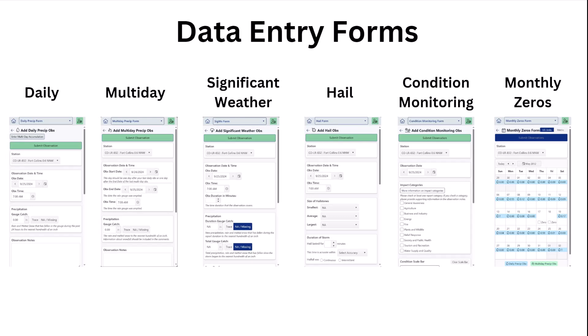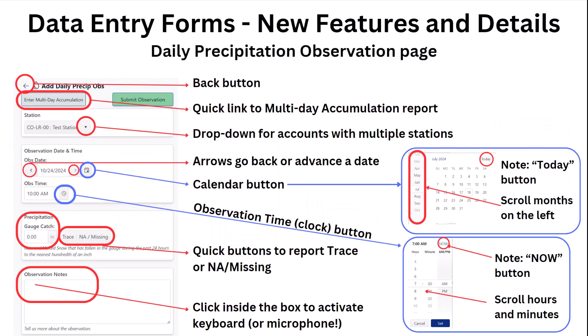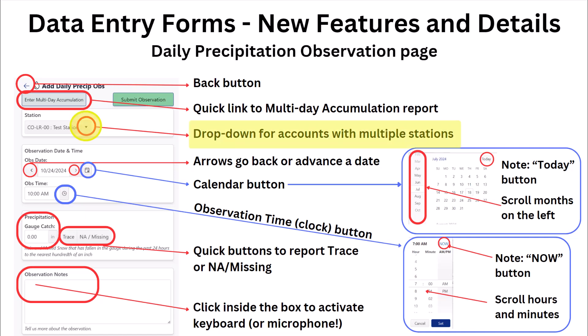We won't go over every specific detail of every form, but we'll show some of the main features found in most of them. The most common form is your daily precipitation form. There is a back button to navigate to the previous page, and you may receive an "are you sure" type of warning if you are in the middle of entering an observation and attempt to navigate away. There is also a quick link button to navigate to the multi-day accumulation form. If you have an account with multiple stations, you will have a drop-down menu to select the correct station.